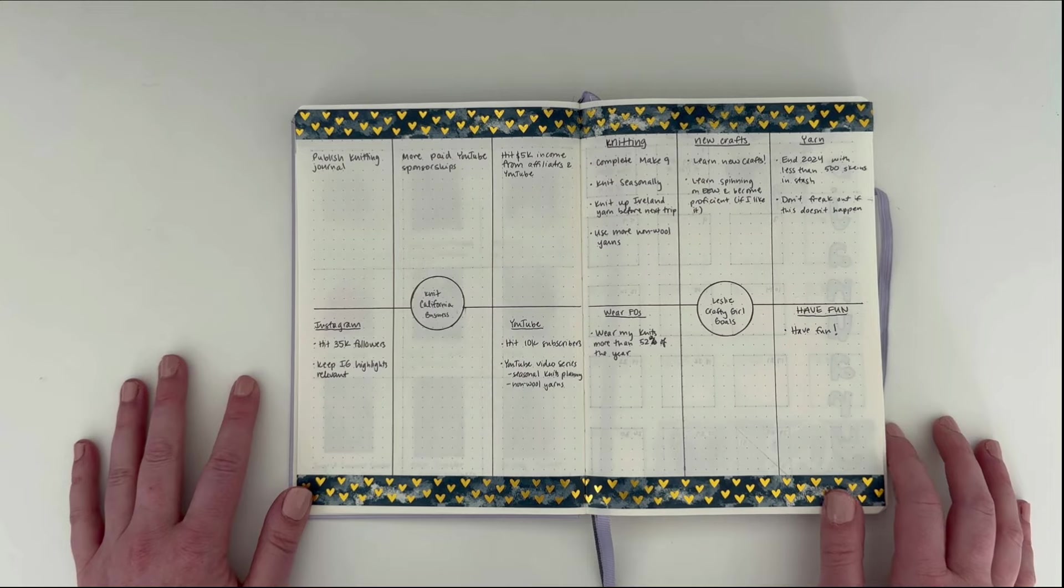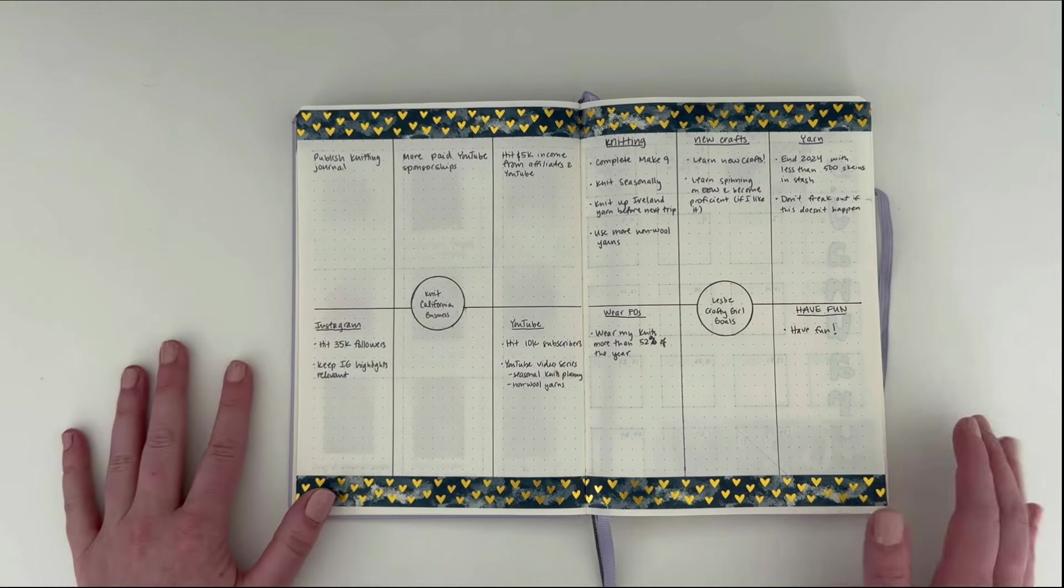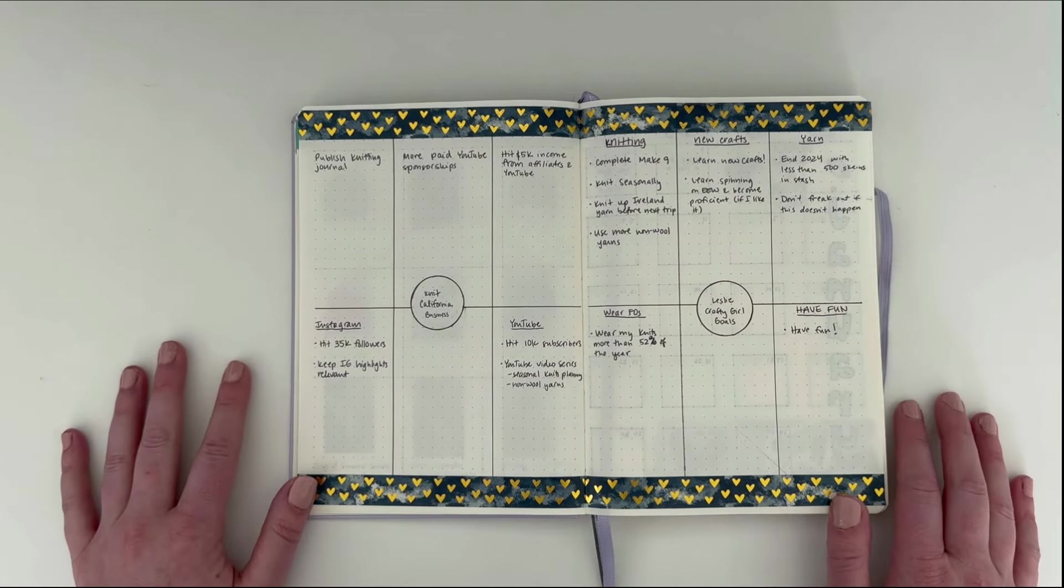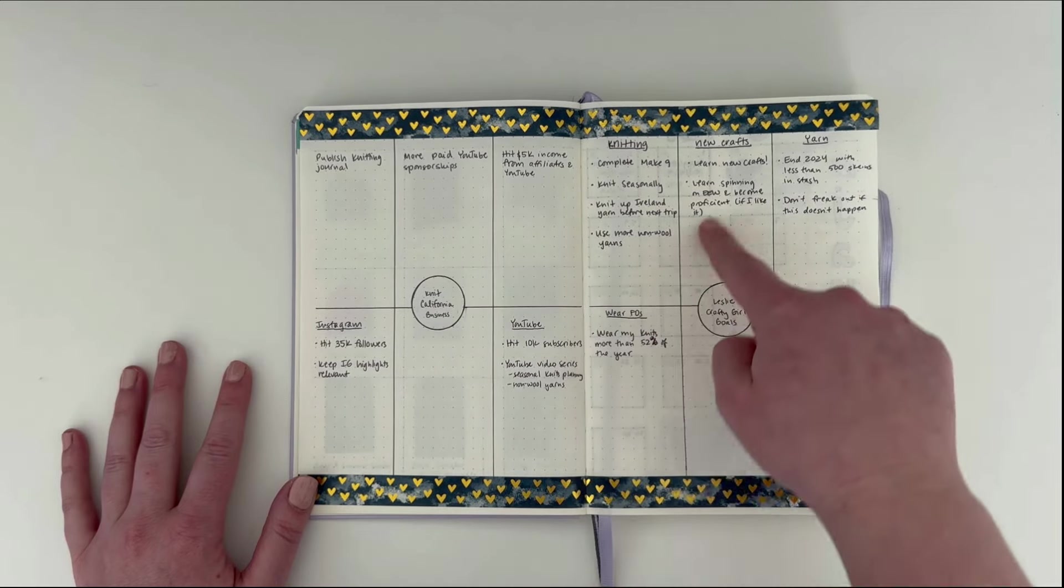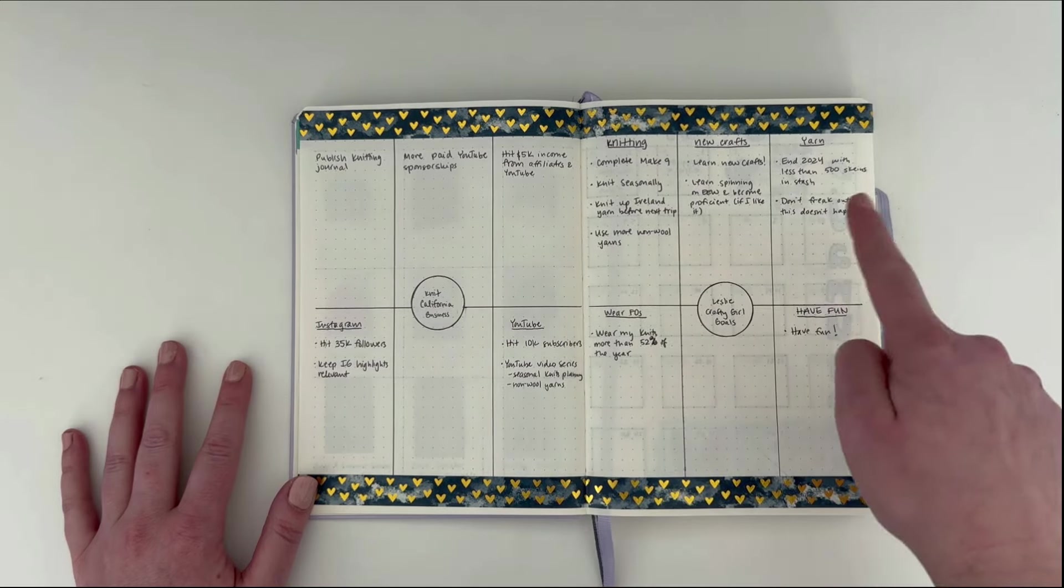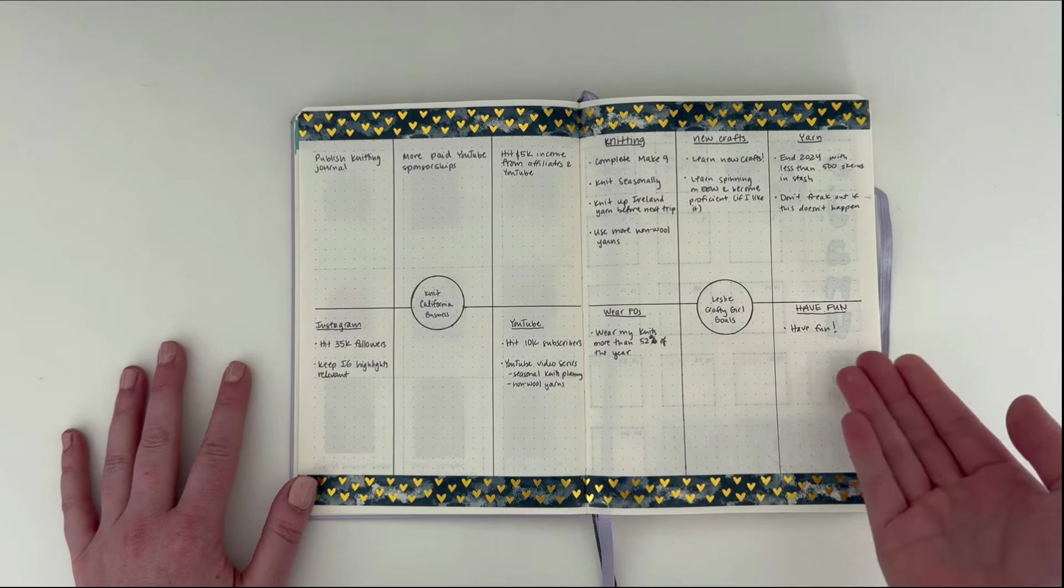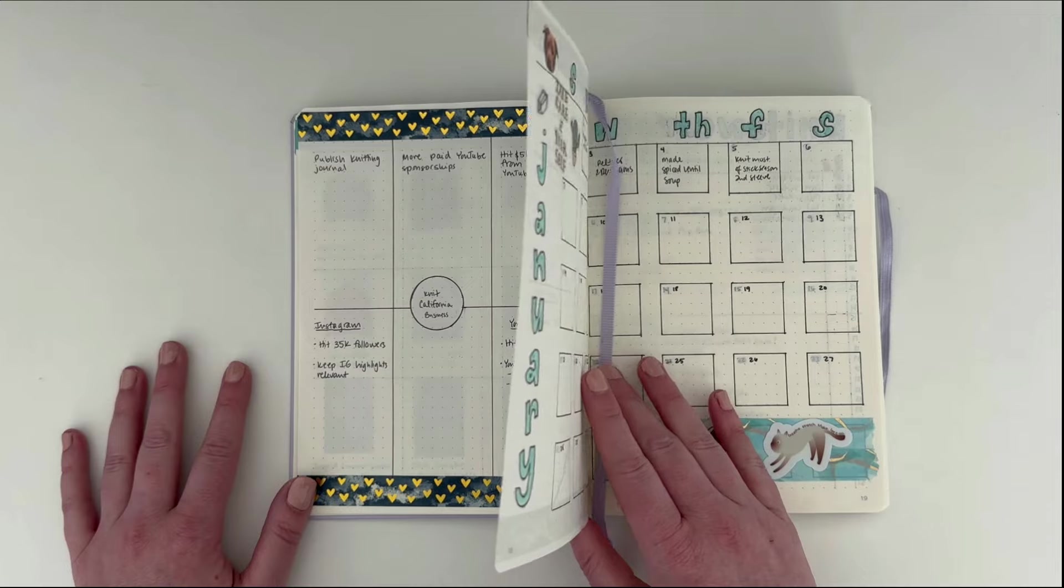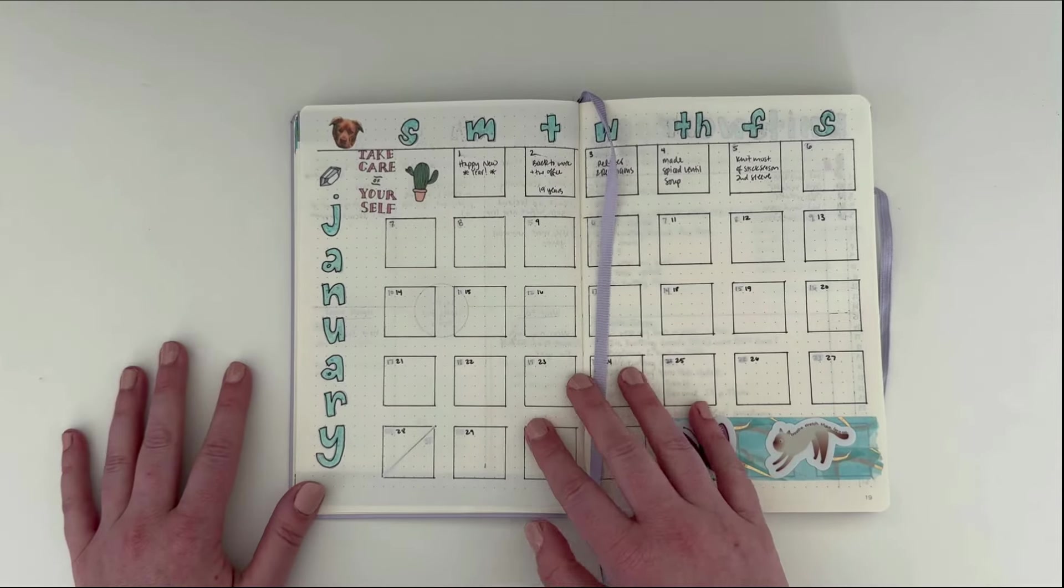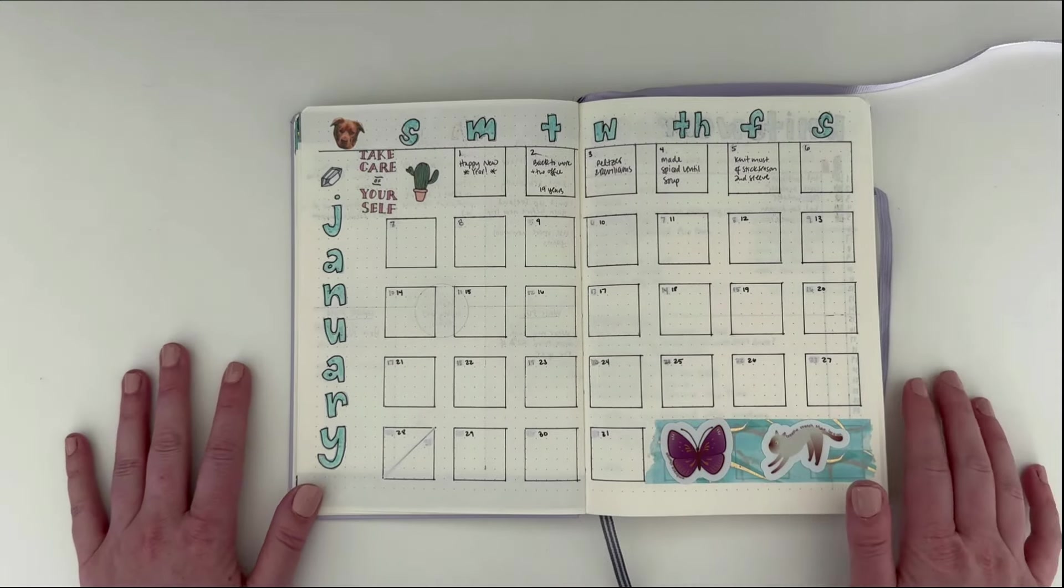Next are my goals. So the left side is my Knit California business goals. And the right side is what I'm calling my crafty girl goals. Everything to do with my own knitting, learning new crafts, my yarn stash, wearing my FOs, and really the overall goal to have fun. I'm going to have a whole video talking about all of these. So I don't necessarily want to go a full deep into them right now. Those are all of my yearly knitting pages. And then we come into the monthly pages.